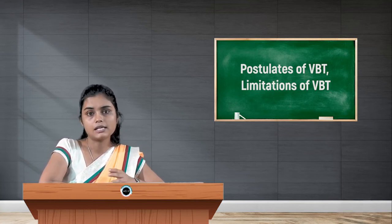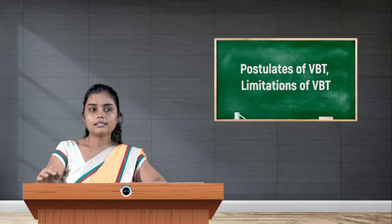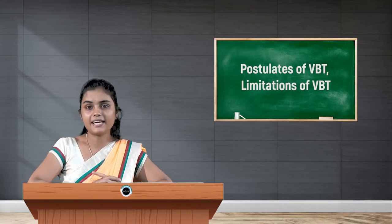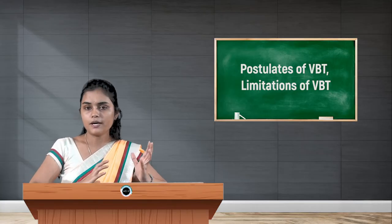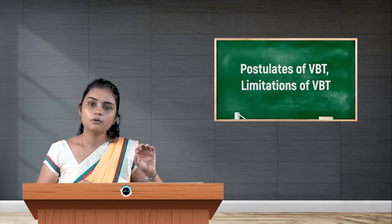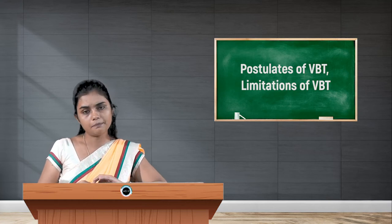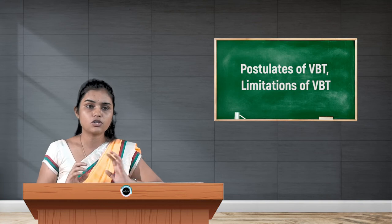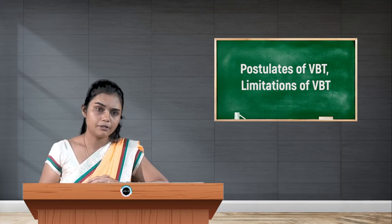The next postulate states that appropriate atomic orbitals of the central metal ion hybridize to give an equal number of new orbitals of equal energy, called hybrid orbitals. In other words, the atomic orbitals of the central metal ion, which originally have unequal energy, undergo the special phenomenon of hybridization to produce new orbitals — these are called hybrid orbitals.